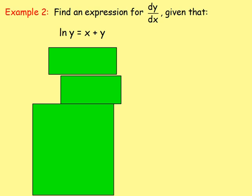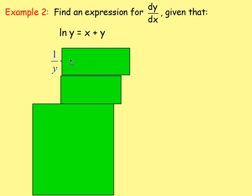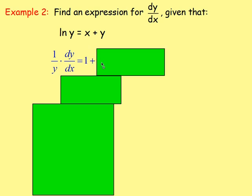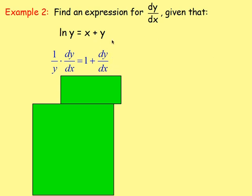Example 2: find an expression for dy/dx given that ln y equals x plus y. Again, you don't need to rearrange — just differentiate implicitly. Differentiating ln y with respect to x gives (1/y) dy/dx. Differentiating x gives 1, and differentiating y with respect to x gives dy/dx. So we have (1/y) dy/dx equals 1 plus dy/dx.